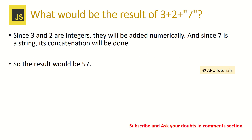What would be the result of 3 + 2 + "7" (where 7 is a string)? Since 2 and 3 are integers, they are added numerically first, giving 5. Since "7" is a string, it will be concatenated at the end. So the output will be "57".